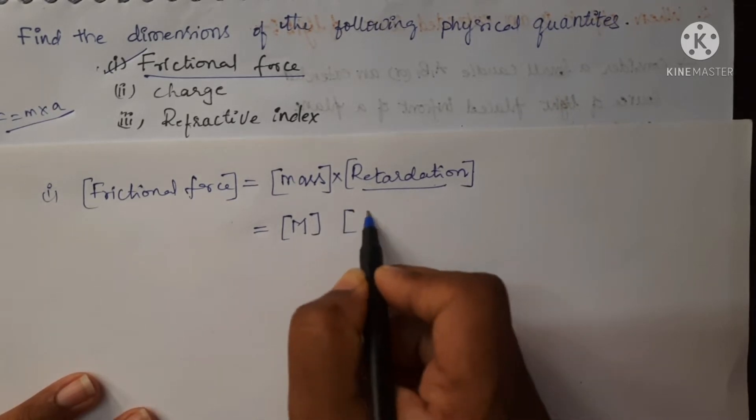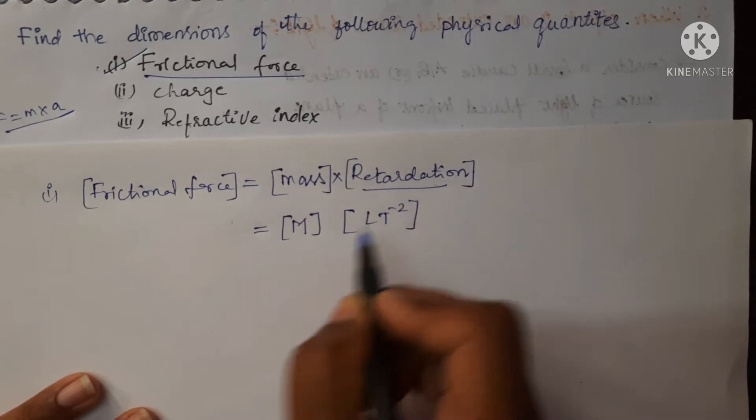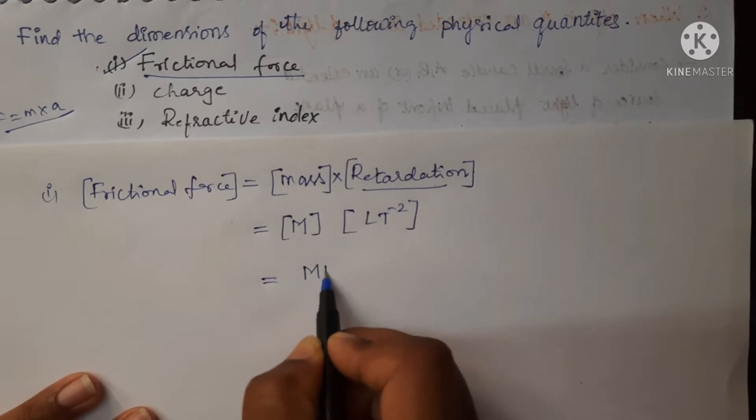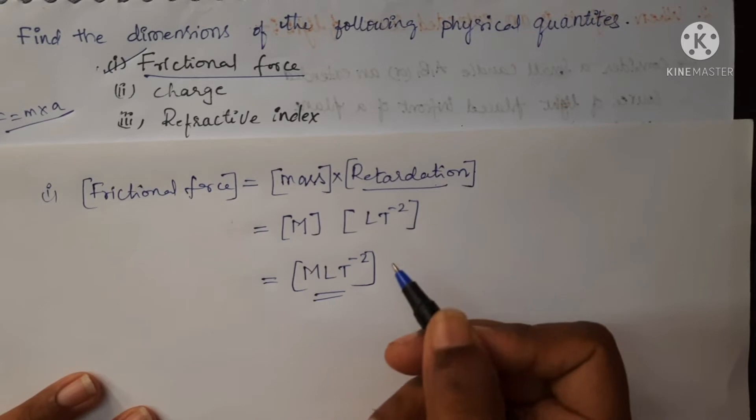Which is LT^-2. Now the dimensions of the frictional force is MLT^-2. This is the dimensional formula for frictional force.